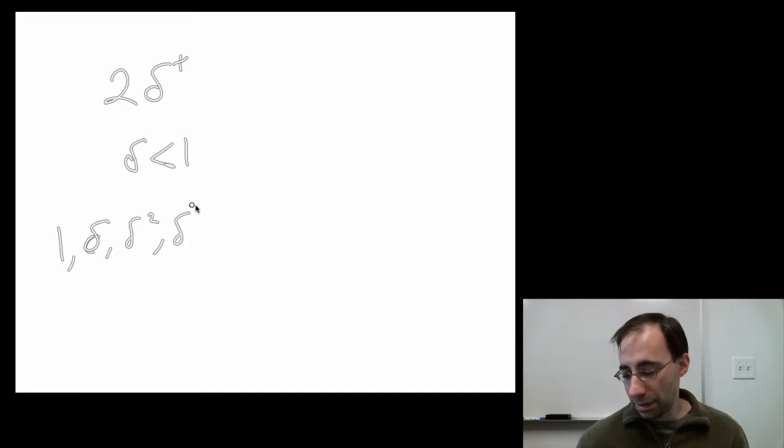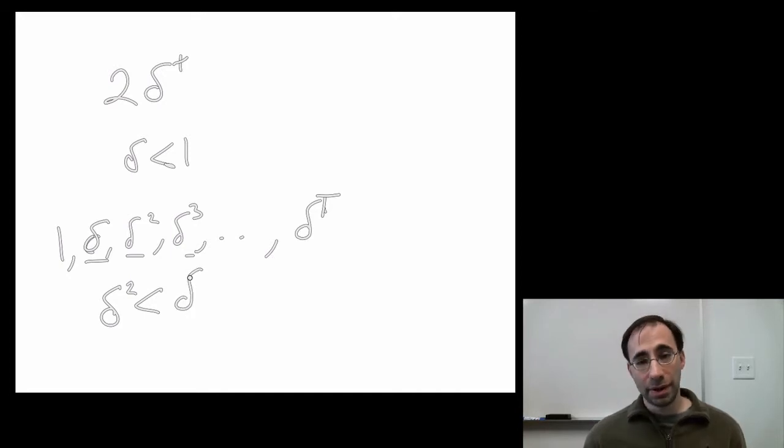We can stop at some capital T, some large number. These, since each one of these deltas is less than one, when you square it, you get a number even smaller than delta. It's a property of a number between zero and one that when you square it, it's less than the original one. And so on forever, so this number gets smaller and smaller and smaller.